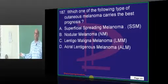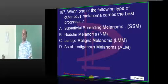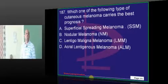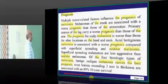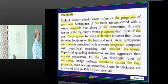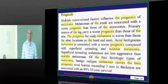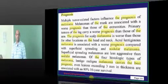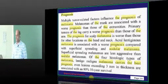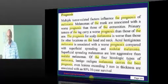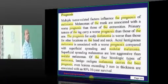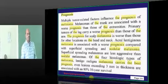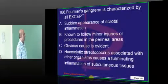Melanoma - favorite question. What is your answer? Lentigo maligna melanoma has the best prognosis. Superficial spreading is the most common type. Nodular melanoma has the poorest prognosis. You must read it every day - melanoma.